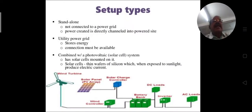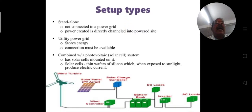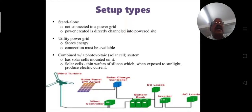There are three setup types. First, a simple system not connected to a power grid — power is created and directly channeled to the powered site. Second, a utility power grid setup, generally used in our country, where generated electricity is connected to the power grid and supplied to communities and businesses. Third, a combined system with photovoltaic solar cells, where thin wafers of silicon exposed to sunlight produce electric current.